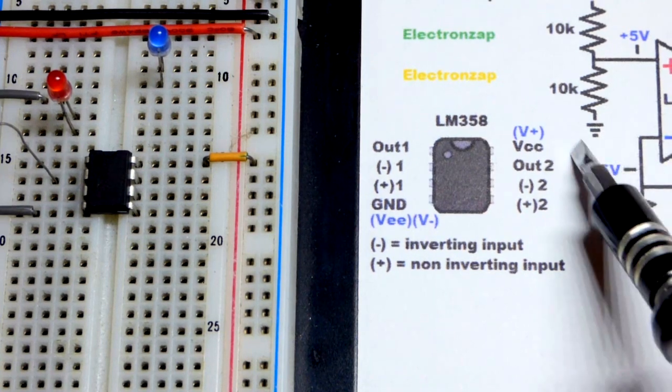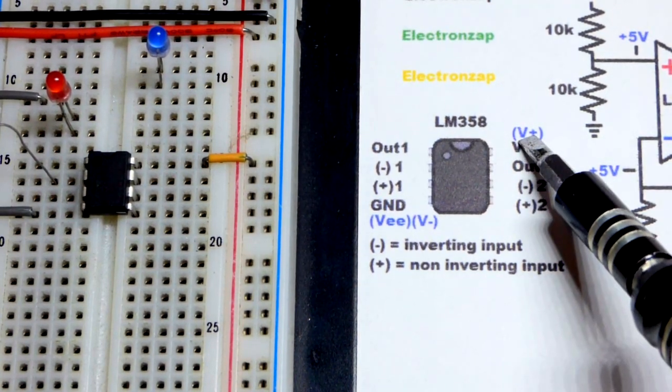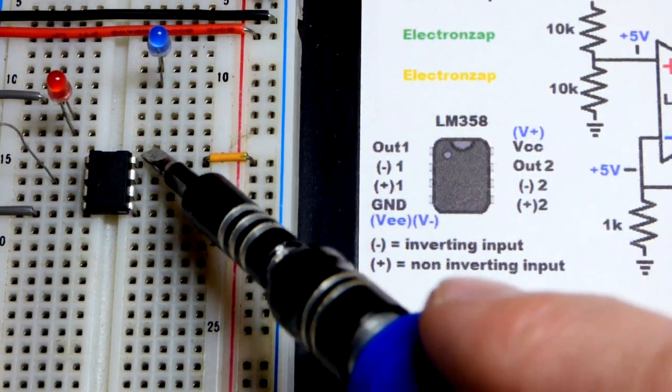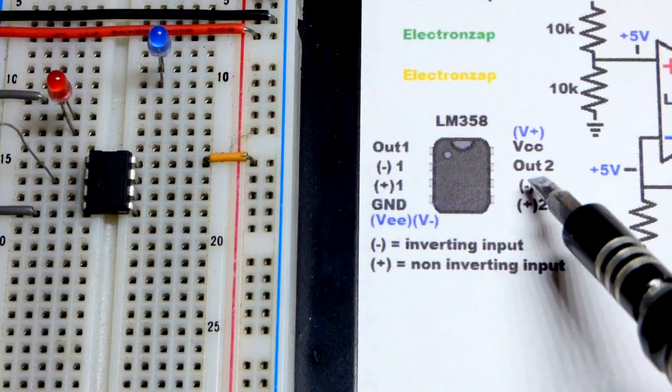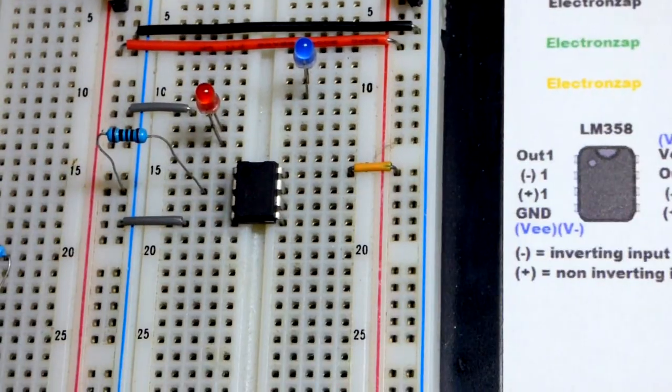Of course, we have to power the integrated circuit. We've got VCC. Some data sheets say V+. So that's the positive side of the power supply right there to pin 8. We're not going to use this op-amp over there. We're just going to leave it alone.